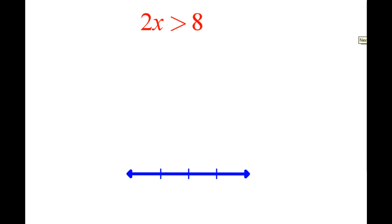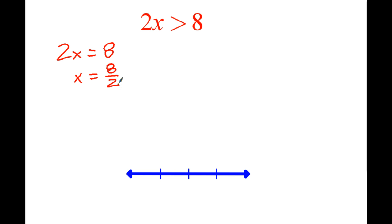Again, the same idea is you solve it just like you would normally solve any sort of equation. You'd pretend if this said 2x equals 8, right? So what we're saying is we have two groups of something equal to 8, so what we can do is say this is equal to 8 divided by 2, because we're going to do the opposite. Instead of multiplying by 2, we're going to divide by 2.